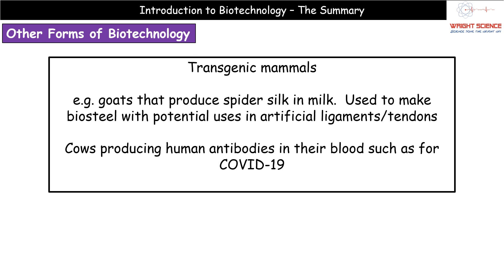Biosteel is of particular interest for replacing ligaments and tendons in the body. Spider silk is incredibly strong relative to the size of its fiber, and if we can produce it at scale via goats, we can use this Biosteel material to replace ligaments and tendons that must withstand serious forces. We've also seen cows genetically modified to produce human antibodies in their blood — antibodies for key viral infections that can then be administered to human patients, including in the context of COVID-19.